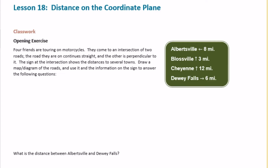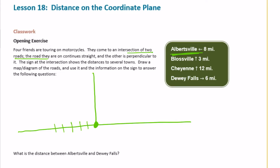We need to draw this out. They come to an intersection of two roads — the road they're on continues straight, and the other is perpendicular to it. I'm going to draw a perpendicular line. Their cars are right at that intersection. Albertsville is 8 miles to the left, so I'll count eight units to the left: one, two, three, four, five, six, seven, eight. This is Albertsville.